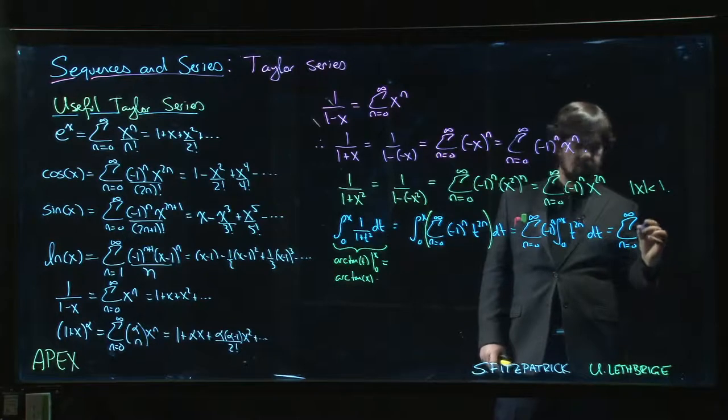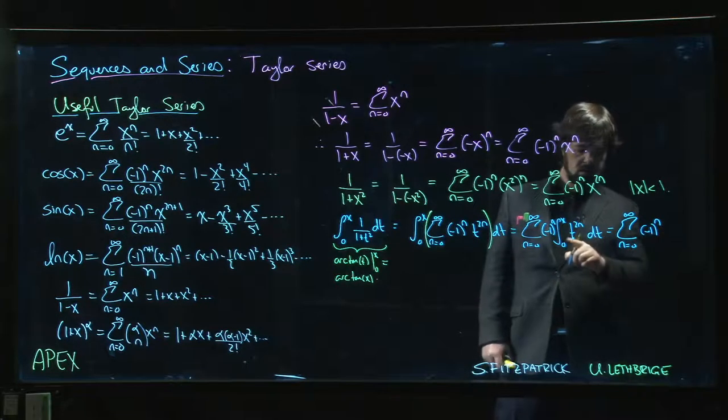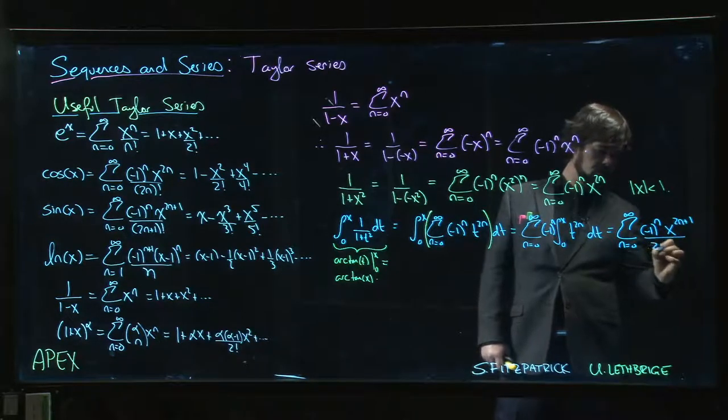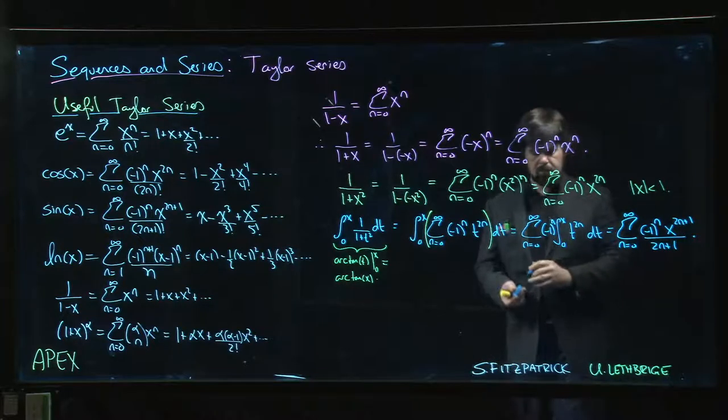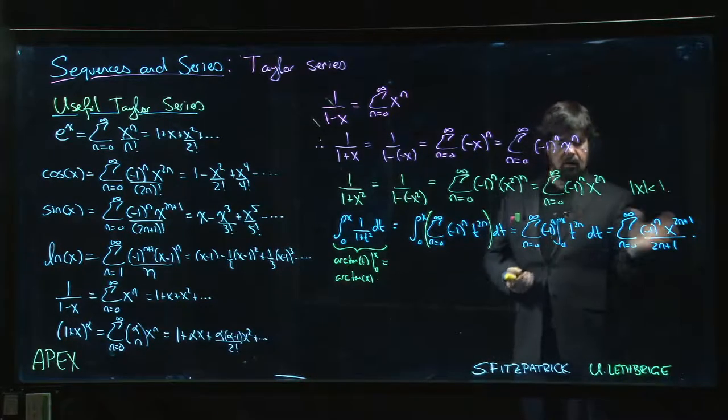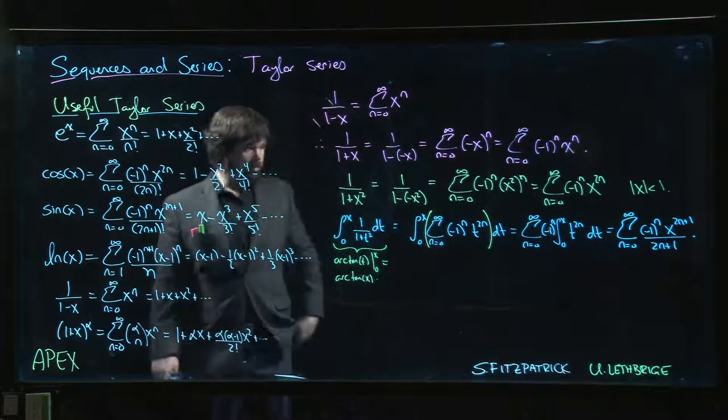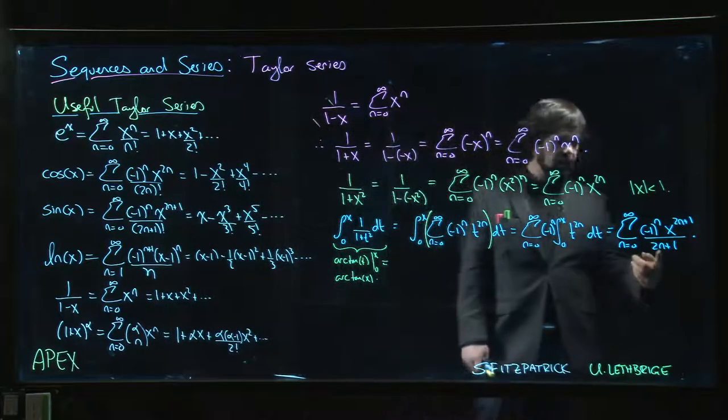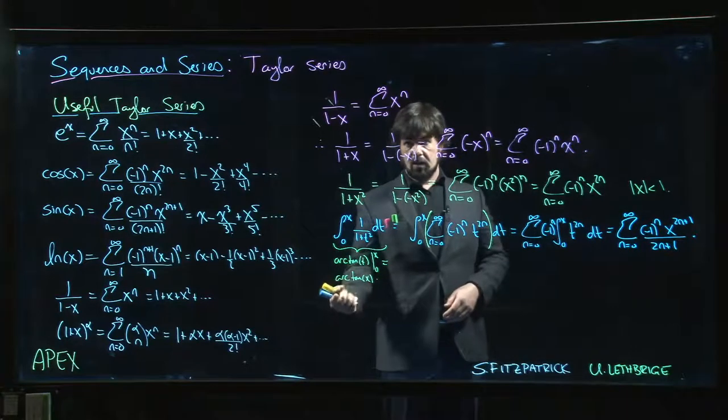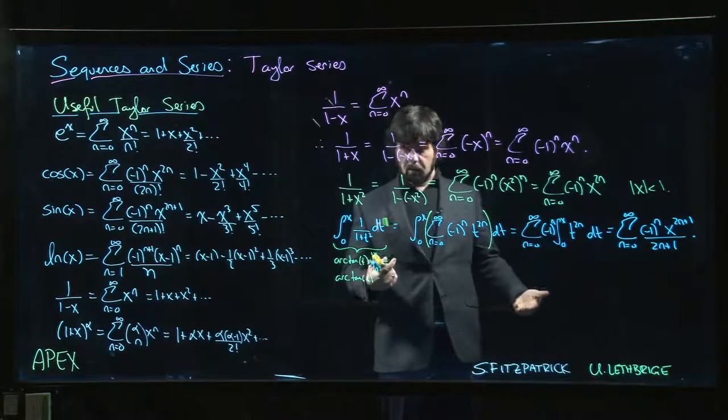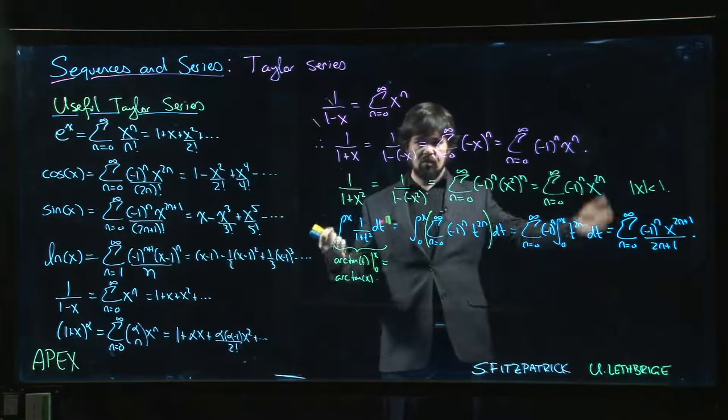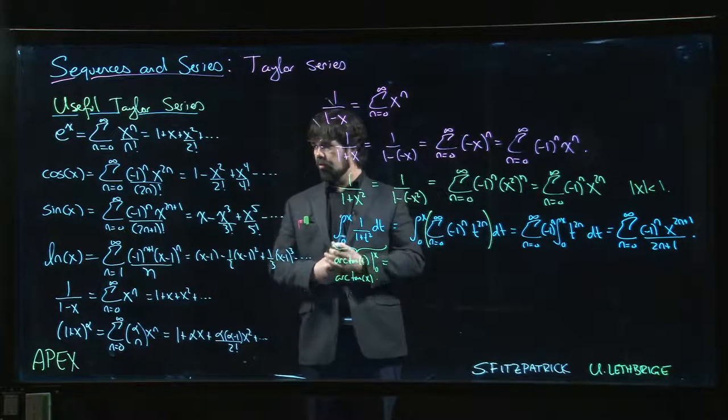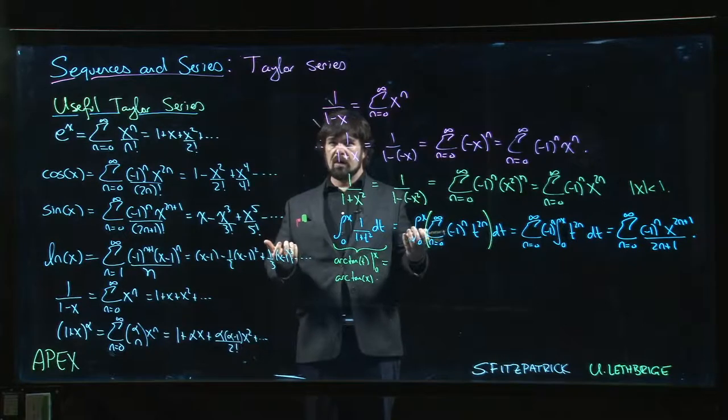What do we get? We get the sum n going from 0 to infinity of minus 1 to the n, that's going to be x now to the 2n plus 1 divided by 2n plus 1. Now we have a power series that represents arctangent. We have essentially a Maclaurin series for arctangent, and that's going to be a heck of a lot easier than sitting there and just taking derivatives, taking derivatives of arctangent and waiting to see if we can spot a pattern. We can just sort of do this substitution, integrate term by term, we get the answer. This is a more straightforward approach to solving some of these problems.